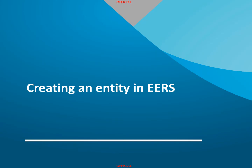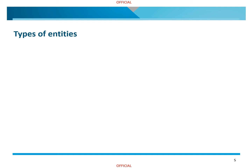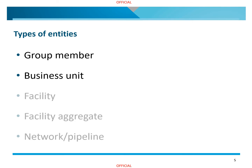First, how to create an entity in EARS. A number of different entities can be created in EARS to reflect your corporate structure. Group members and business units are used to show the way the business is arranged, and which entity within the organization is responsible for a facility. Group members and business units do not have emissions or energy data associated with them. Emissions and energy data is reported for facilities, facility aggregates, and networks and pipelines, assuming that the relevant reporting thresholds are triggered. The reporting thresholds are defined in the ENGA Act.